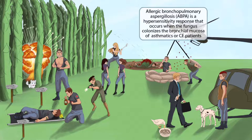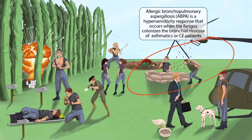Let's finish up by discussing allergic bronchopulmonary aspergillosis, or ABPA. Everything regarding this idea will be around the soldier sneezing in this area. We've shown a soldier covering his mouth while sneezing underneath a helicopter — he must be allergic to those tubers behind him. The reference to allergies near the asparagus jungle should make you think of allergic bronchopulmonary aspergillosis. The same soldier has an inhaler in his hand, making you think of asthmatics. A second soldier carries a bag of salt labeled CF, and the reference to salt and CF should make you think of cystic fibrosis. So ABPA is a hypersensitivity response that occurs when the fungus colonizes the bronchial mucosa of asthmatic or CF patients.